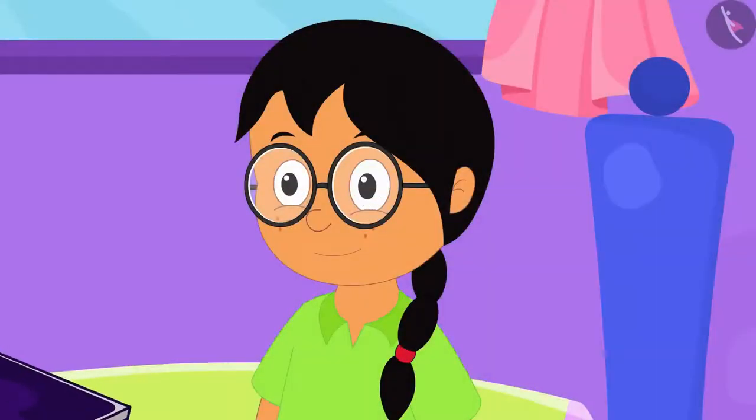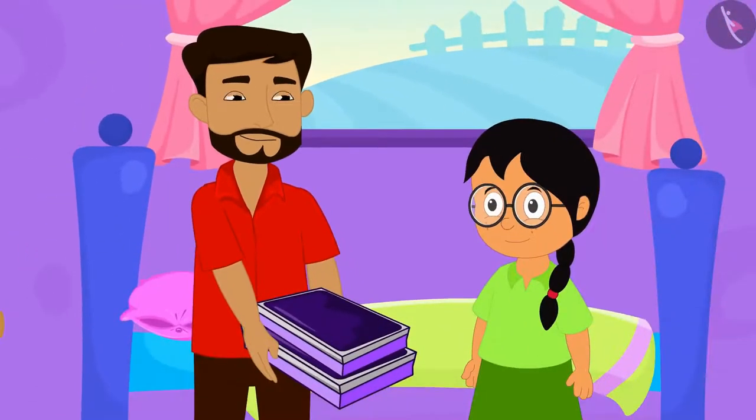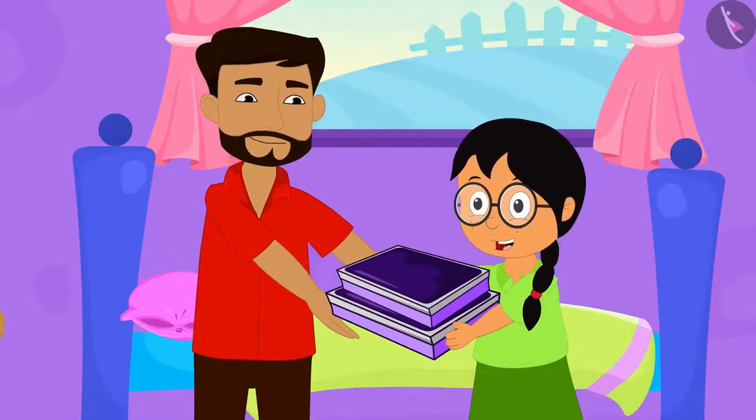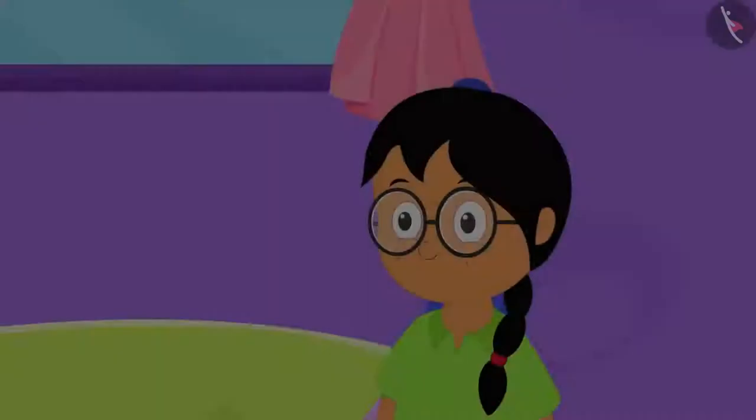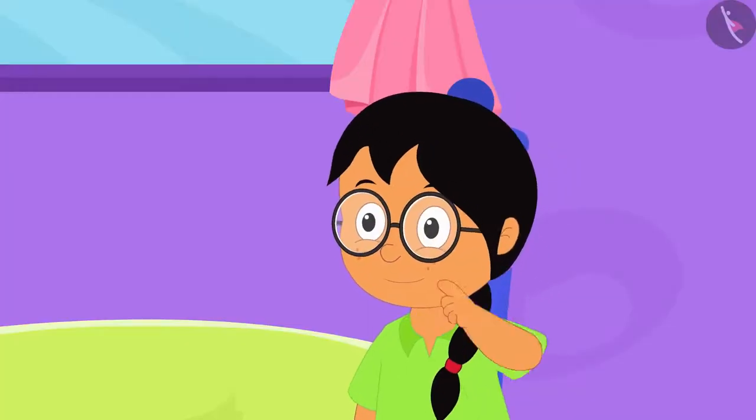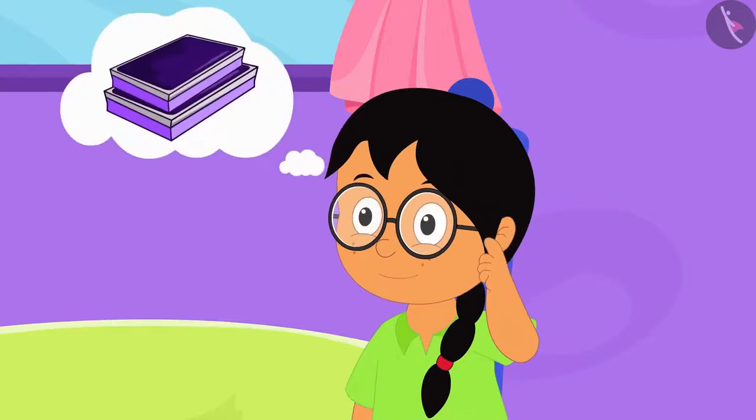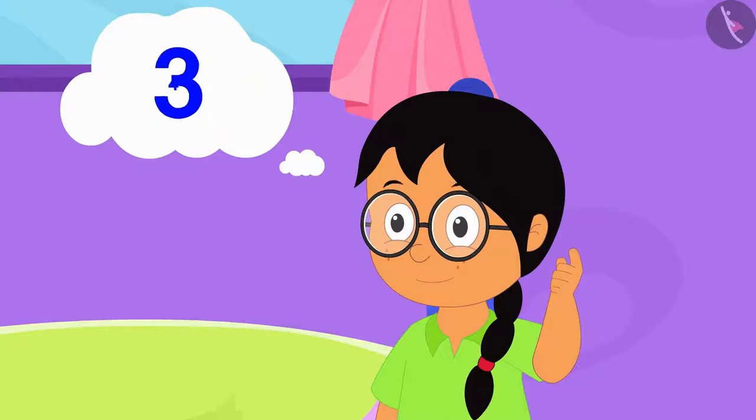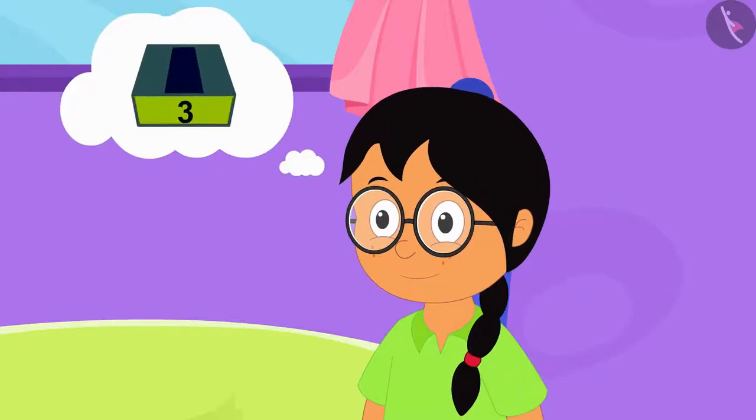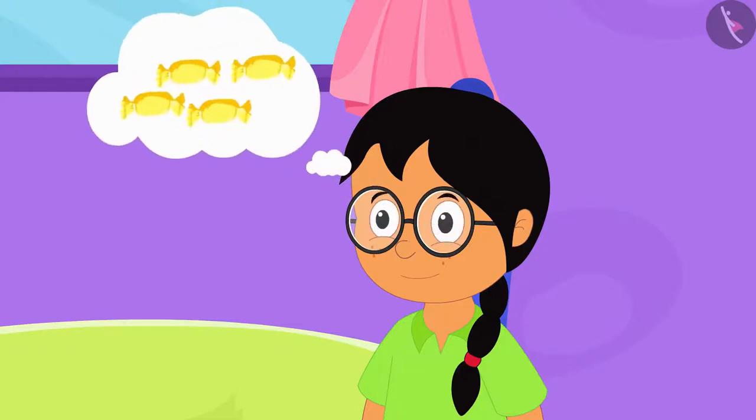Today, Meenu's uncle has come from abroad. He has brought various toffees for Meenu and her friends. Meenu is thinking that she will divide those toffees using groups of 3, 4, 5, or 7 in such a way that no toffee is left.